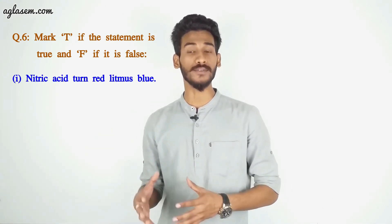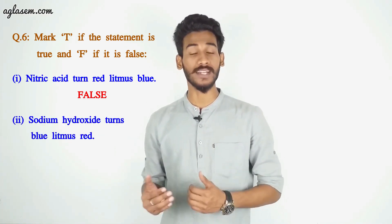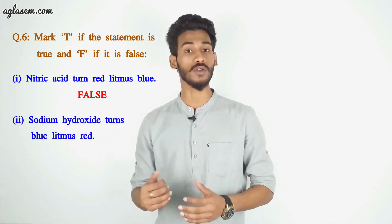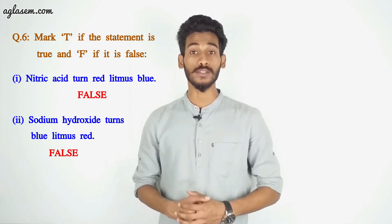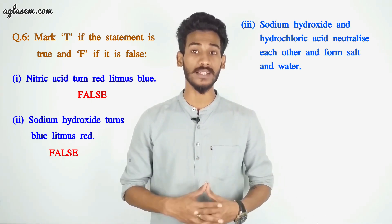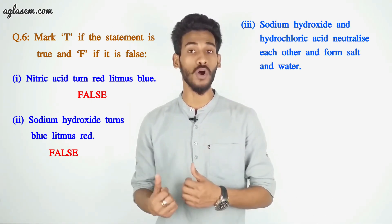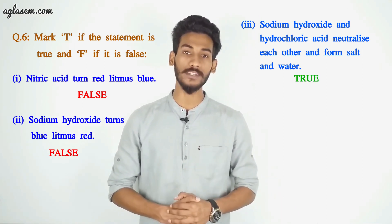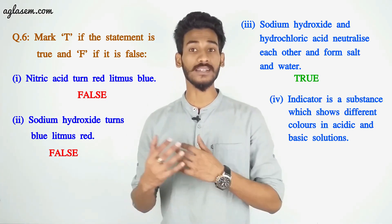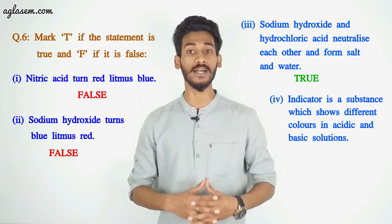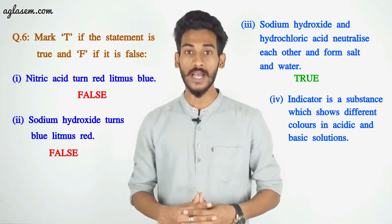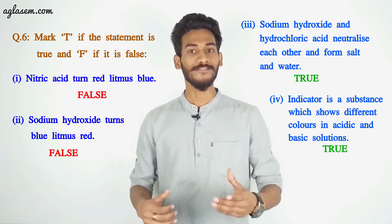Question 6: Mark T if true and F if false. 1. Nitric acid turns red litmus blue — False. 2. Sodium hydroxide turns blue litmus red — False. 3. Sodium hydroxide and hydrochloric acid neutralize each other and form salt and water — True. 4. An indicator is a substance which shows different colors in acidic and basic solutions — True.